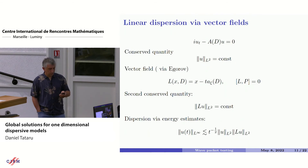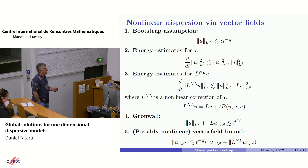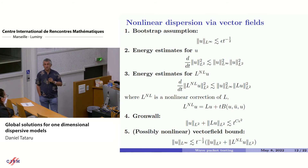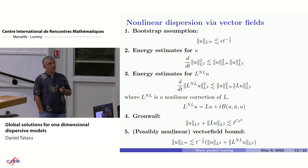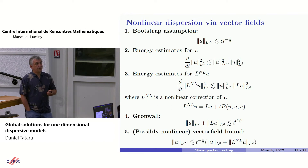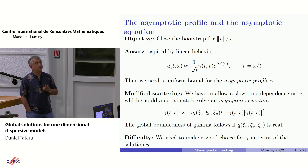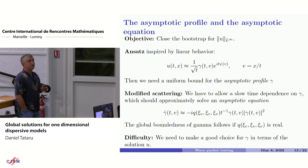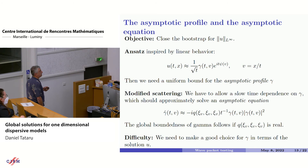You also get a nonlinear vector field bound of the t to the power minus one half type. One interesting catch is that on occasion it becomes useful to think of this L-nonlinear operator not as a perturbation of the linear operator but as a genuinely nonlinear inequality — something we first explored together with Mihaela in a paper on the Benjamin-Ono equation. But even if you get the t to the power minus one half decay from this vector field bound, this combines with the slight growth, so you're not there yet. This takes us to looking at the asymptotic profile and the asymptotic equation.